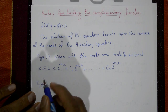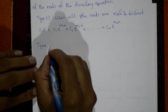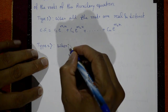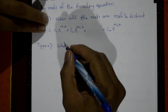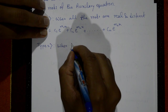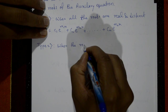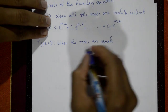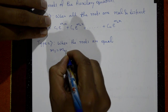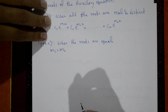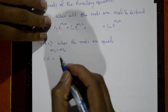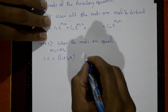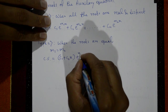Type 2: when the roots are equal. That means two roots are equal — m1 and m2 are equal. The complementary function when two roots are equal is (c1 + c2·x)·e^(m1·x).